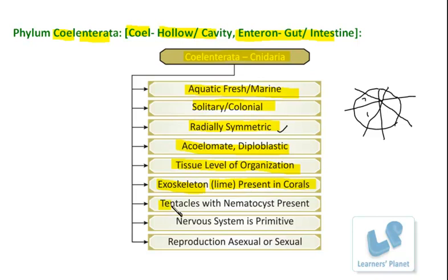Next is about the tentacles. In some organisms belonging to Coelenterata, tentacles are present. These tentacles have structures known as nematocysts. These nematocysts are actually helping in capturing other organisms — they release some chemicals which paralyze the prey, and this is how they are able to capture these other living organisms.